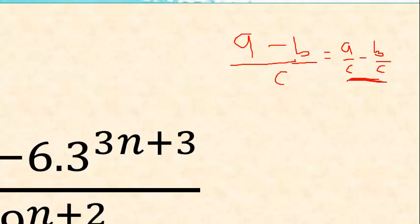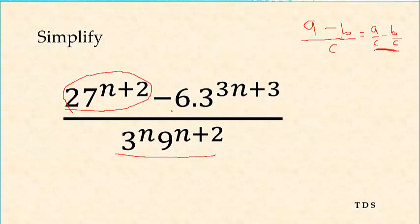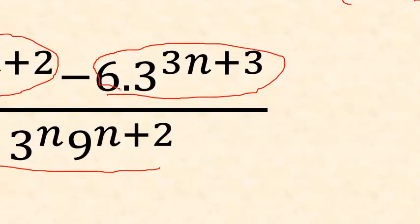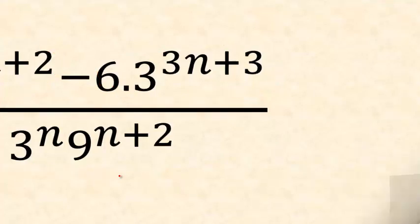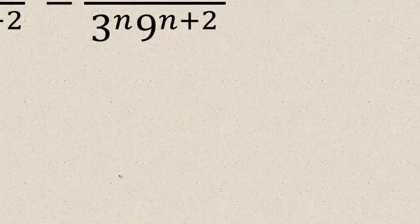We are going to rewrite this one as 27 to the power n plus 2, minus 6 dot 3 to the power 3n plus 3. Now, what is the same number here? Let's move on with that — very simple. We have this one nicely done.